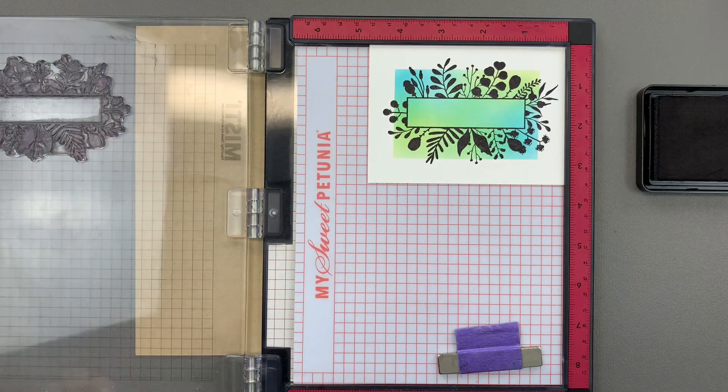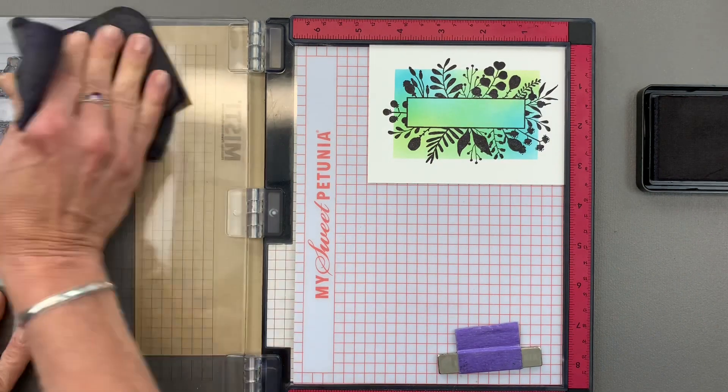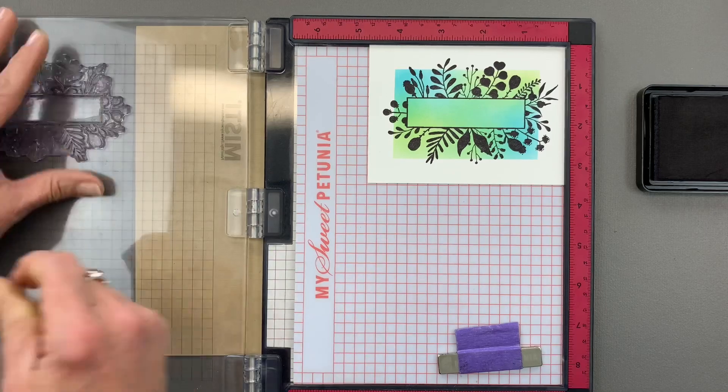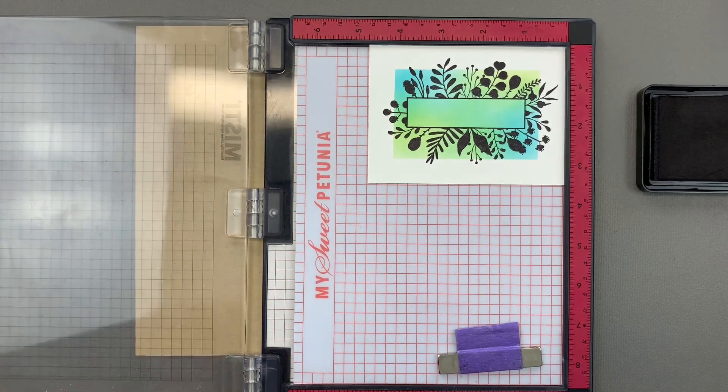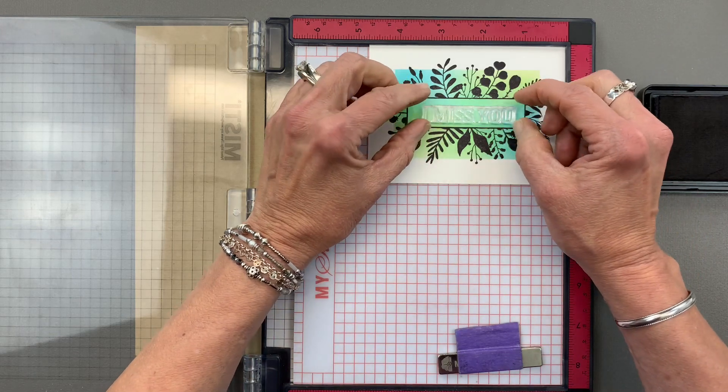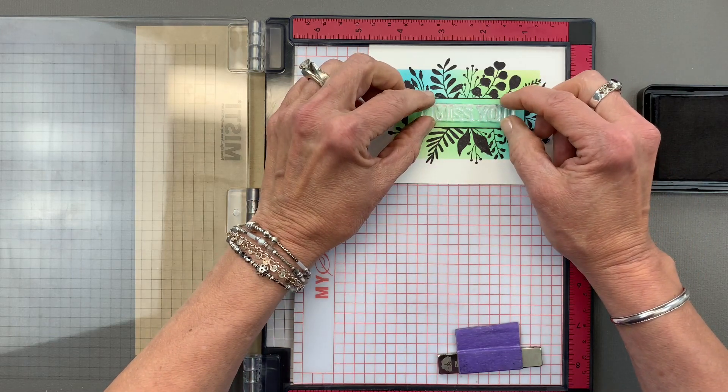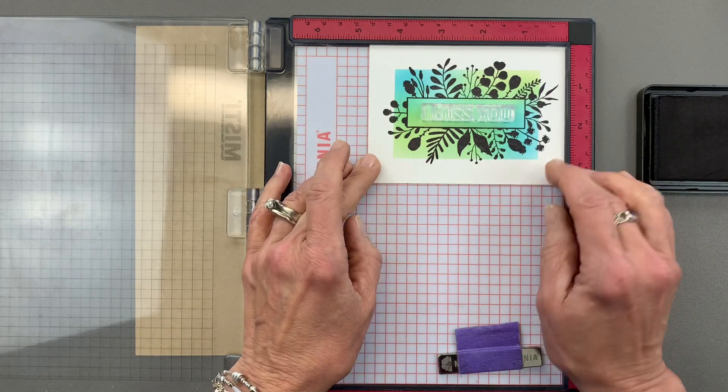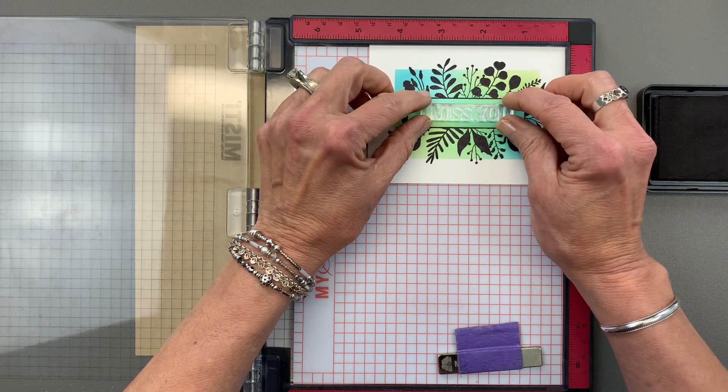Okay, so now my next step is going to be to add a greeting and there's lots of great greetings in this set that will fit this box. I'm going to use the one that says I miss you because I've got lots of people on my card making list that I am missing these days, so this will make a nice card for one of my friends.